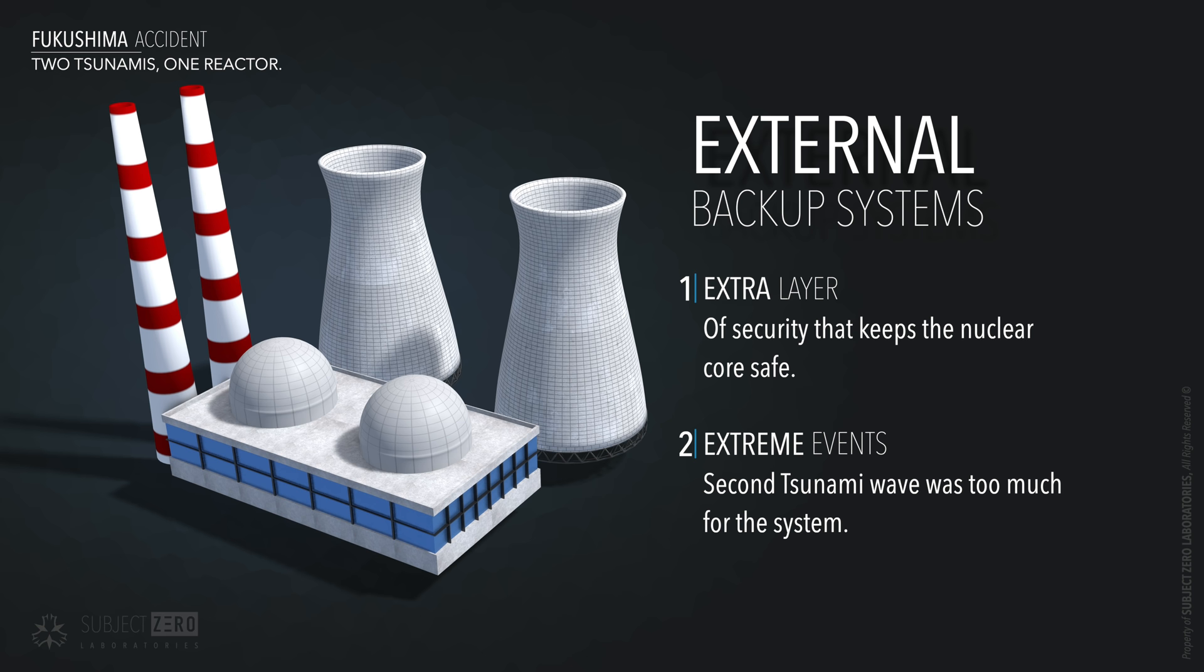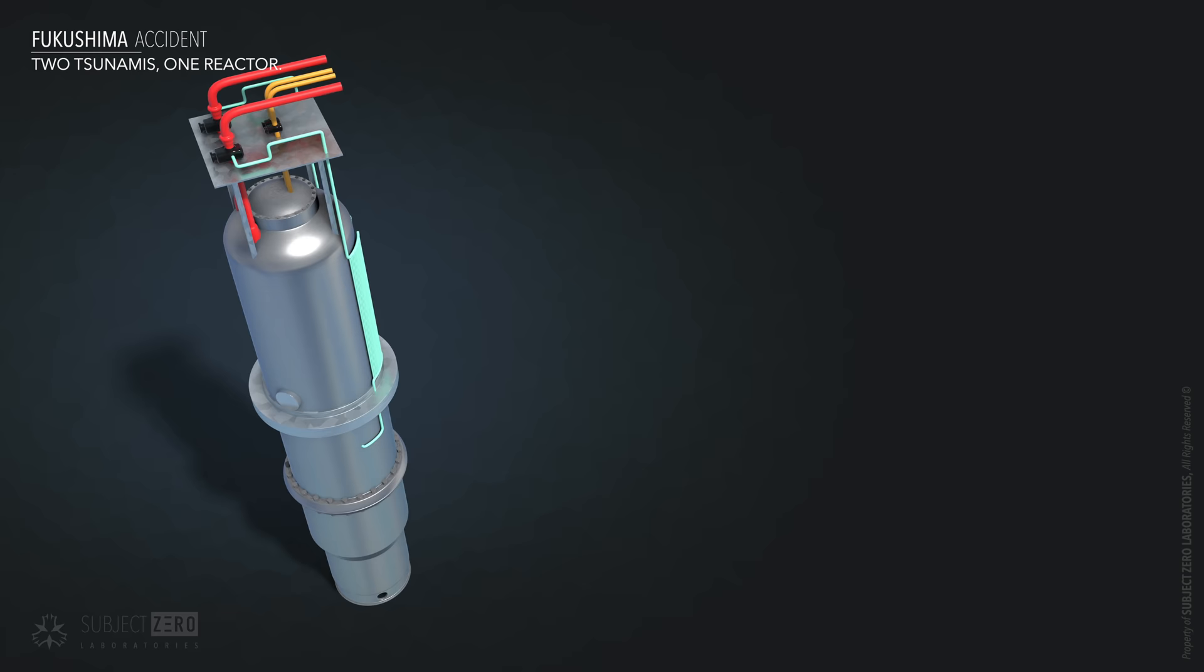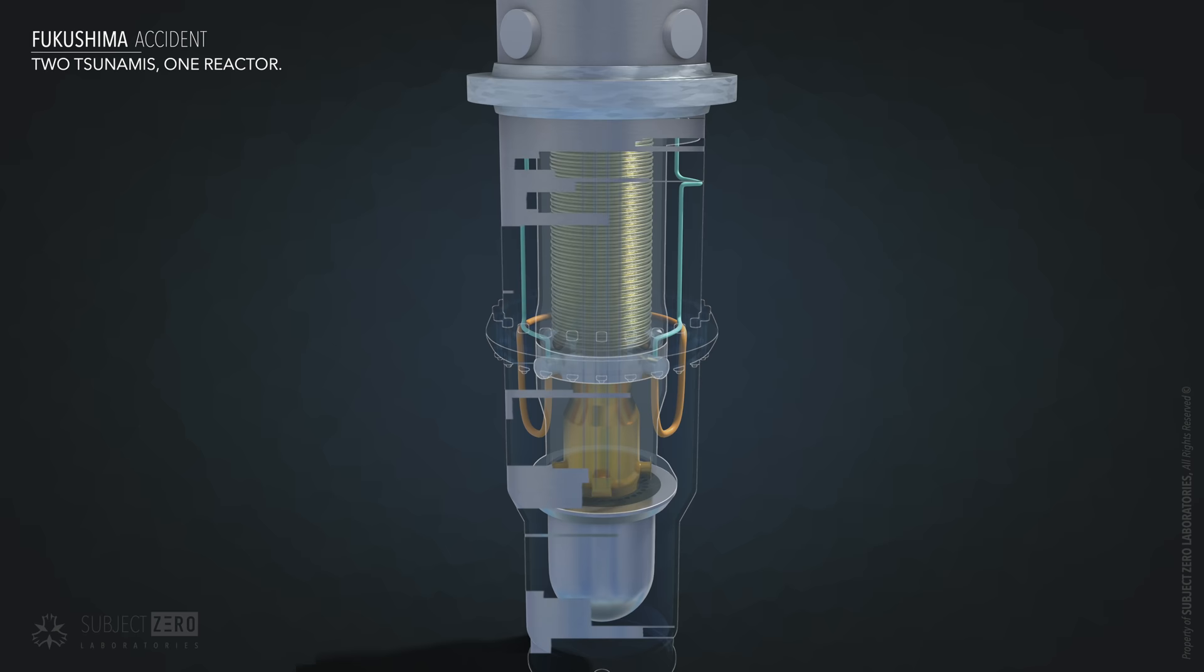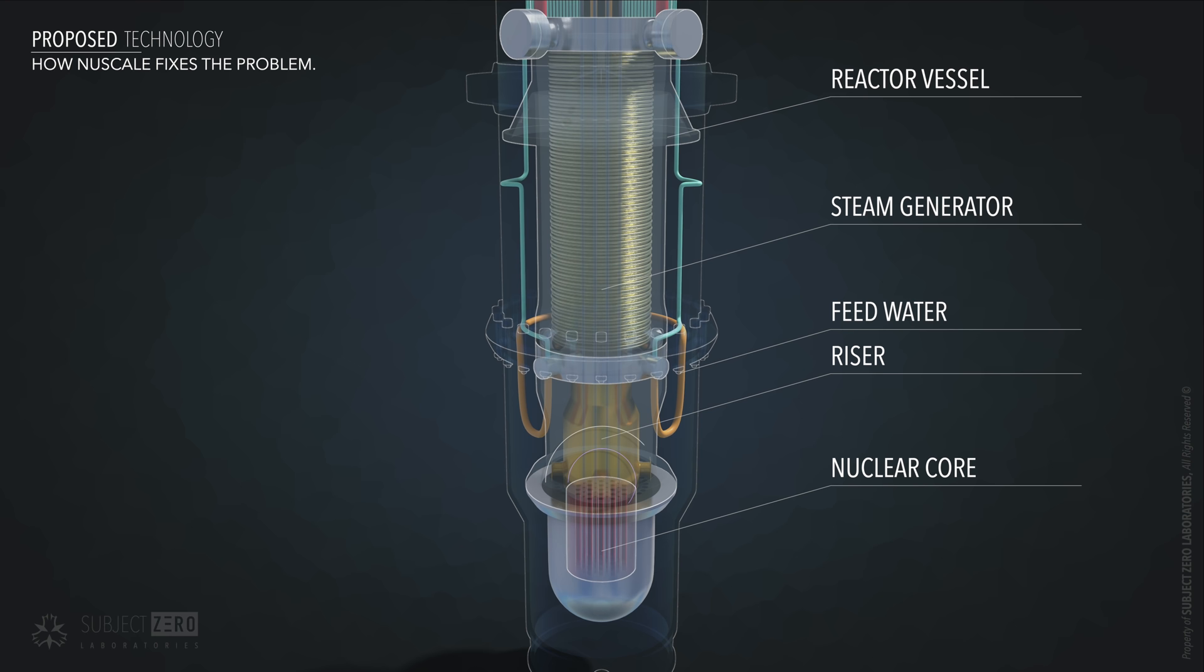By making smaller self-contained reactors, not only do you decrease the amount of nuclear fuel, but also less energy is emitted in an eventual emergency shutdown. Let me explain. It starts with the lower reactor vessel where the nuclear fuel is located.